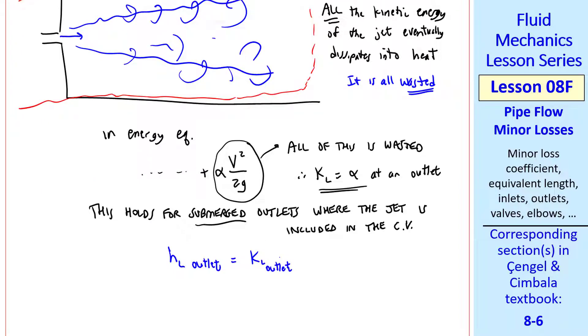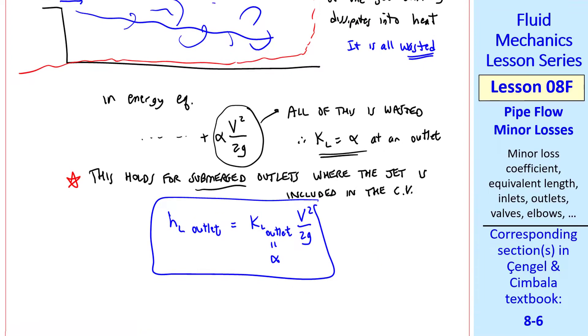So when we're summing up all the minor losses, we would include this one and set KL of the outlet to alpha. This is a case where we have a submerged outlet with the jet included in the control volume.